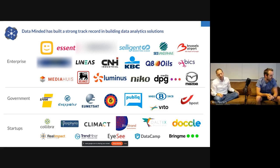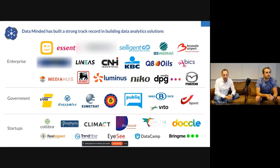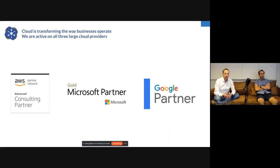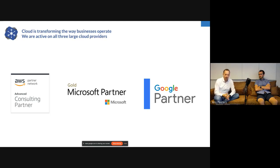A quick word about who we are at Data Minded. What we do is we build data solutions for companies mostly based here in Belgium. We work with enterprise customers a lot, we also work with government on projects like LAN, SNCB, or Bpost, and we work with startups to help them get going in the data analytics space. We do a lot of things in the cloud — we're big believers. We specifically didn't choose a single cloud provider because we want to help our customers where they are — AWS, Azure, or Google Cloud.